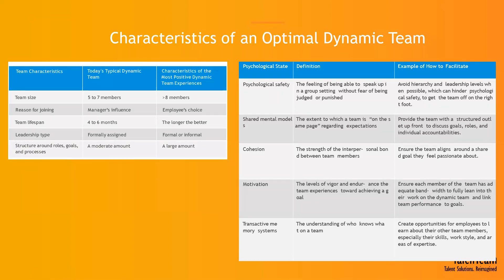However, for the most positive outcome from dynamic teams in your organization, we recommend that team member size should be more than eight members. The reason for joining should be the employee's own initiative rather than a push from management. Team lifespan can be longer — the longer the better. Leadership type within the dynamic team can be formal or informal — there could be a project manager or someone like a lead architect who manages the leadership. Structure around roles, goals, and processes — as long as they are defined in a proper way — is also a recommended practice for an optimal dynamic teams experience.